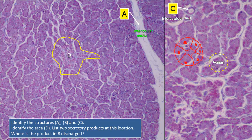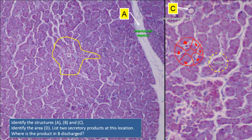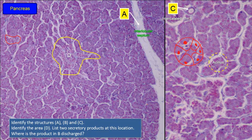The ducts present between the acini are the smaller intercalated ducts, lined by simple low cuboidal epithelium. Larger ducts may be lined with taller cuboidal or sometimes stratified cuboidal epithelium and are generally located in connective tissue septa between lobes. Apart from the exocrine glandular tissue, there is a lighter-stained area indicated in D — lighter compared to the acini. These lighter-stained areas, scattered between the acini, reflect the endocrine component of this organ.